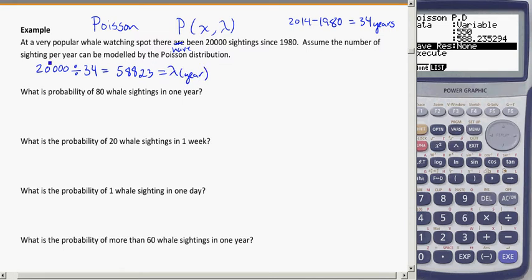So that's what our lambda is going to be for a year. Here we're saying we can assume it can be Poisson. So what's the probability that there are 80 sightings in one year? If we're dealing with a year and our lambda's in year, we can use that lambda of roughly 588.